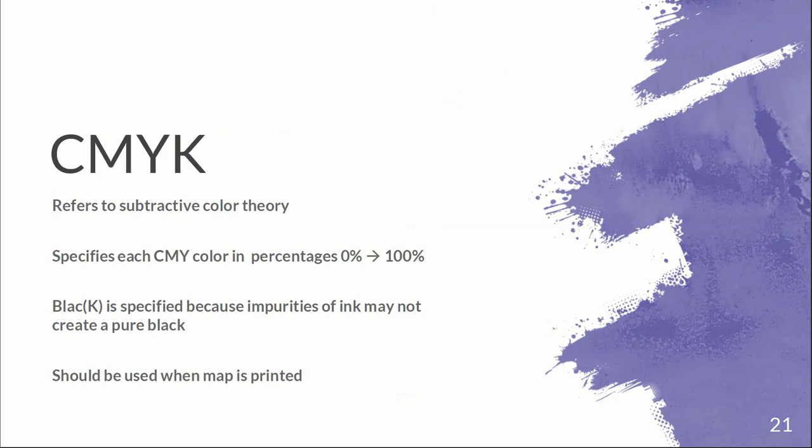CMYK refers to our subtractive color theory. It looks at cyan, magenta, and yellow each in color percentages from 0 to 100%, with 0 being void and 100 being full intensity. The K represents black and is specified separately because impurities of ink may not create a pure black. That's why printers have a dedicated black cartridge on top of the color cartridges — we don't want to waste all that ink just to create black. CMYK should be used at all times whenever we're printing maps.